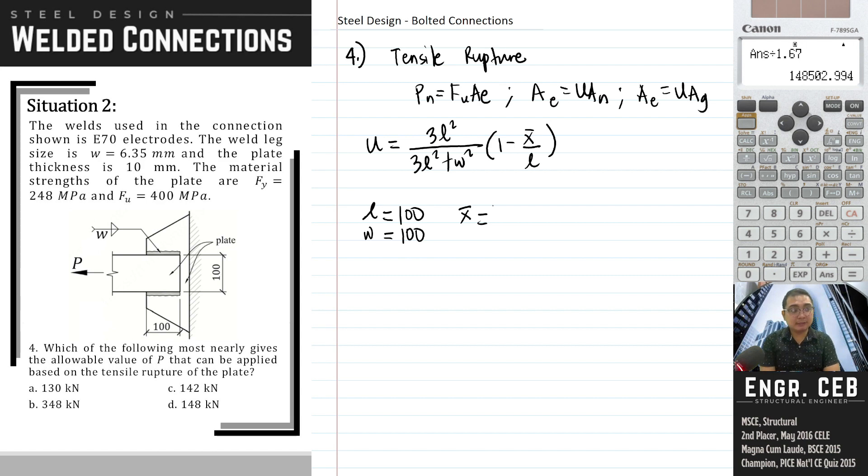Plates aren't in the database, so consider the cross section. The definition of X bar is the distance from the center of gravity of the cross section to the plane of connection. The plane of connection is this interface. For a plate, which is simply a rectangle, the center of gravity is at the middle. If the thickness is 10, therefore X bar is simply 10 over 2, which is 5 millimeters.